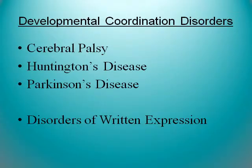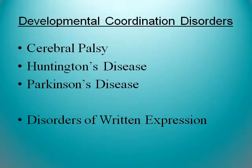Thirty to fifty percent of children with ADHD also meet criteria for developmental coordination disorder. More severe developmental coordination issues come from things like cerebral palsy, Huntington's, Parkinson's, and acquired apraxia. The brain mechanisms involved include the primary and secondary motor areas in the frontal cortex and corticospinal tracts that project through the spine. In essence, planning and initiation of voluntary skilled movement is impaired.